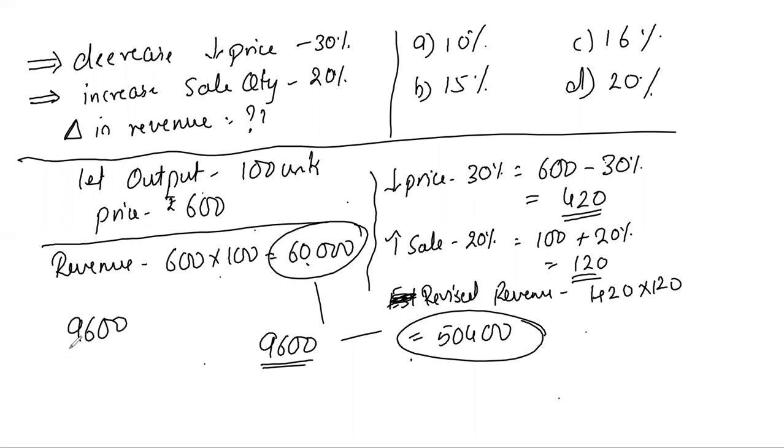So now if I want to find out the percentage, I will do 9,600 divided by 60,000 and multiply by 100. If I calculate this, the answer is 16%. So guys, the answer is C, 16%.